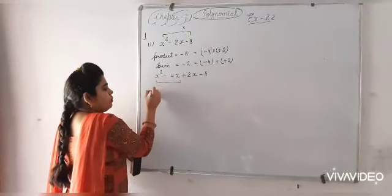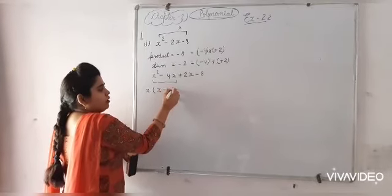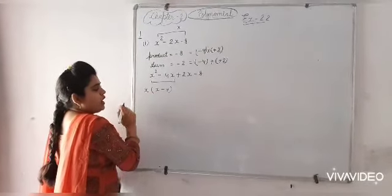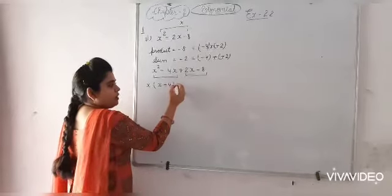Now taking x common, x into x minus 4. What is common in these two? x. So taking x as common, x into x minus 4. And now check what is common in these two last factors?